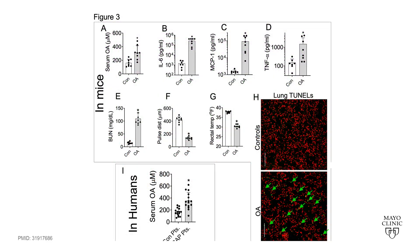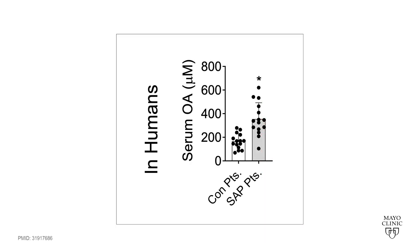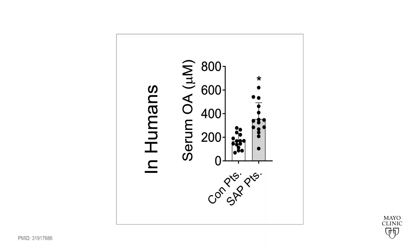The PNLIP-mediated generation of fatty acids like oleic acid, shown here as OA, causes organ failure. In Figure 3, we note that patients with severe pancreatitis and organ failure had high oleic acid levels.